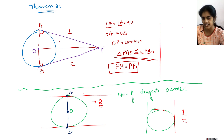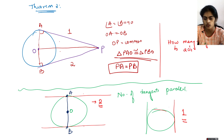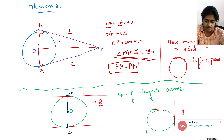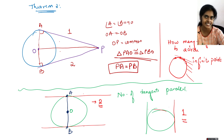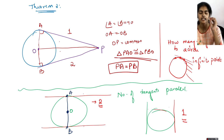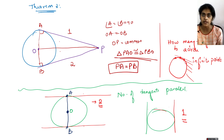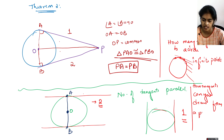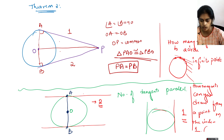Next important concept: how many tangents can you draw to a circle? Since there are infinite points on the circle, you can draw infinite tangents to a circle. Another question: how many tangents can you draw from a point on the circle? The answer is only one.